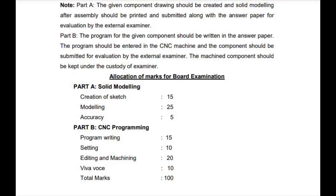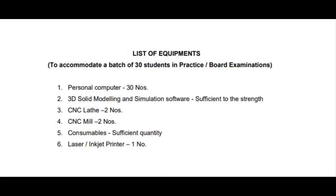Lab equipment requirements: 30 computers with simulation software plus solid modeling software. Lathe machine — 2 compulsory. Milling machine — compulsory. Consumables depend on quantity, and a laser printer is required. This completes the lab equipment list and requirements.